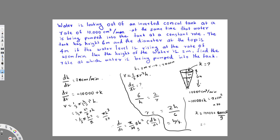Solving this gives K ≈ 289,252.68 cubic centimeters per minute. The answer is positive, confirming the water level is increasing. So the rate at which water is being pumped into the tank is approximately 289,252.68 cm³/min. That's the final answer.